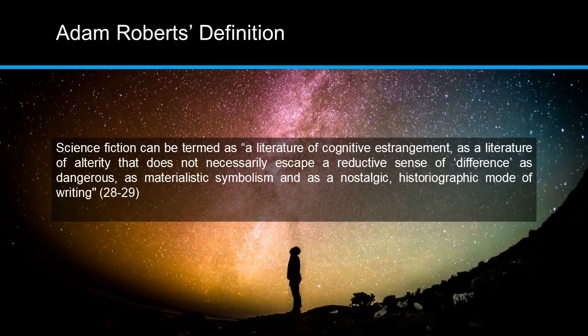According to Adam Roberts' seminal work on science fiction, science fiction can be termed as a literature of cognitive estrangement, as a literature of alterity that does not necessarily escape a reductive sense of difference as dangerous, as materialistic symbolism, and as a nostalgic historiographic mode of writing. He draws this conclusion from three different competing definitions of science fiction that he explores. In the following, I'm going to explain some of the important aspects of this definition to unpack what it means.